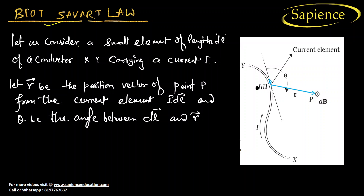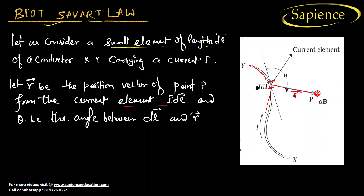What is Biot-Savart law? Let us consider a small element of length dl of a conductor XY carrying a current I. Suppose there is a conductor XY carrying a current I. Let r be the position vector from point P to the current element idl. We want to find how much magnetic field is at point P.